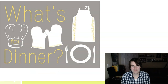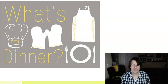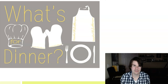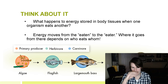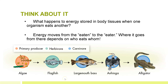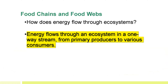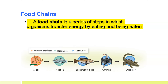What's for dinner? That's what this lesson is all about. Here's a picture of a food chain in the Everglades: algae → flagfish → largemouth bass → anhinga → alligator. Food chains are simpler models, and energy moves from the eaten to the eater. Food chains illustrate energy flows in a one-way direction — energy is not recycled. Once energy is used, it's used. From primary to secondary to various consumers, the food chain shows those series of steps of what's being eaten and who's doing the eating.